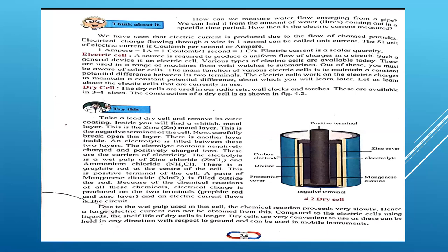The charge is produced on the graphite rod and zinc layer, and an electric current flows in the circuit. This is how your electrical devices work — like your wall clocks, torches, or radios. Due to the wet pulp used in the cell — zinc chloride and ammonium chloride — the chemical reaction proceeds very slowly. Hence, a large electric current cannot be obtained from this type of battery.